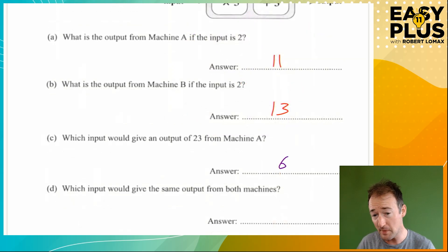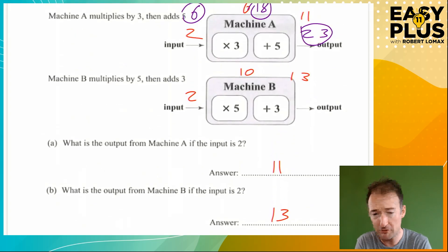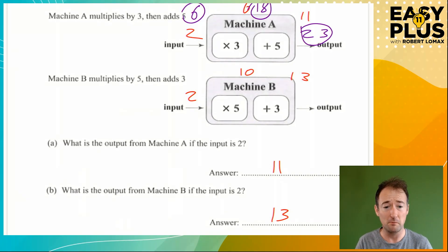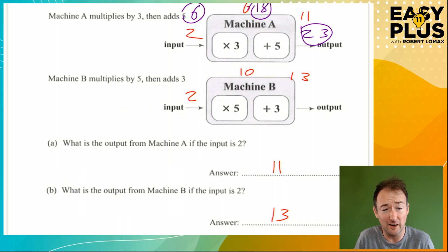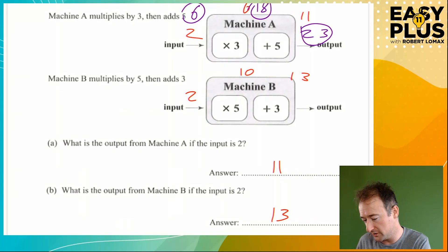Which input would give the same output from both machines? We've got times 3 plus 5, and we've got times 5 plus 3. What do you notice about these numbers? Well, 3 plus 5 make 8 in both cases. So if we just add up these numbers we get 8. But the trouble is we've got something times 3 — we just want 3. How can we have something times 3 and still just have 3? We can do 1 times 3.